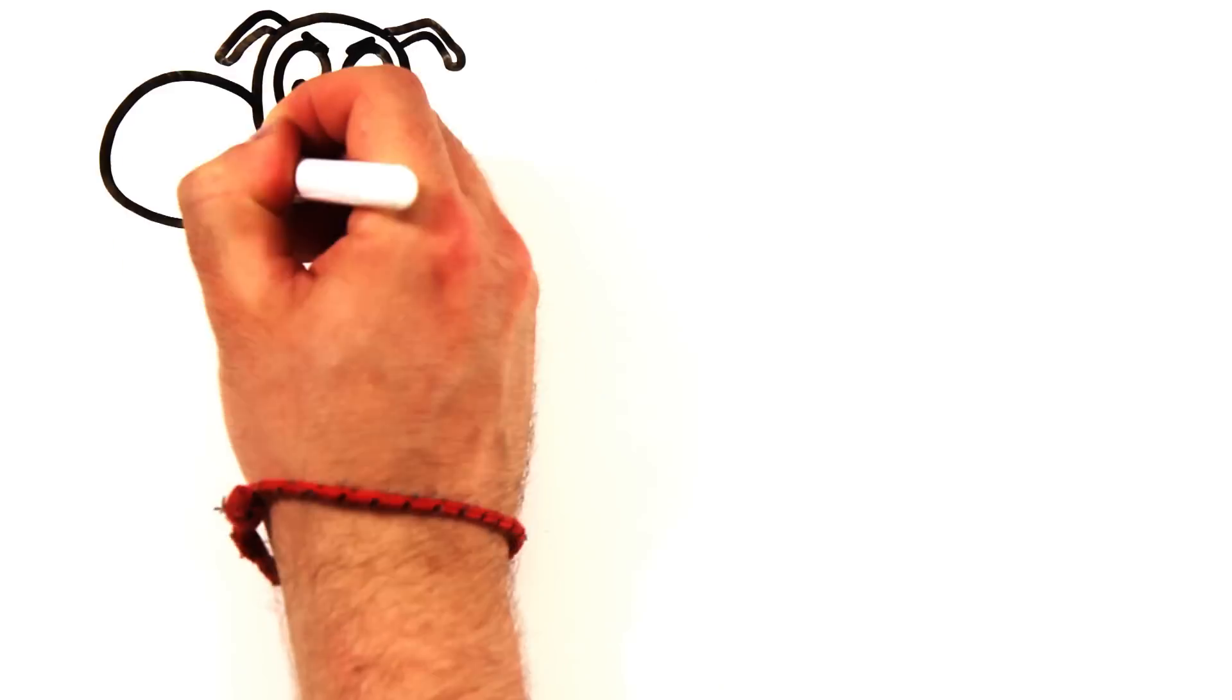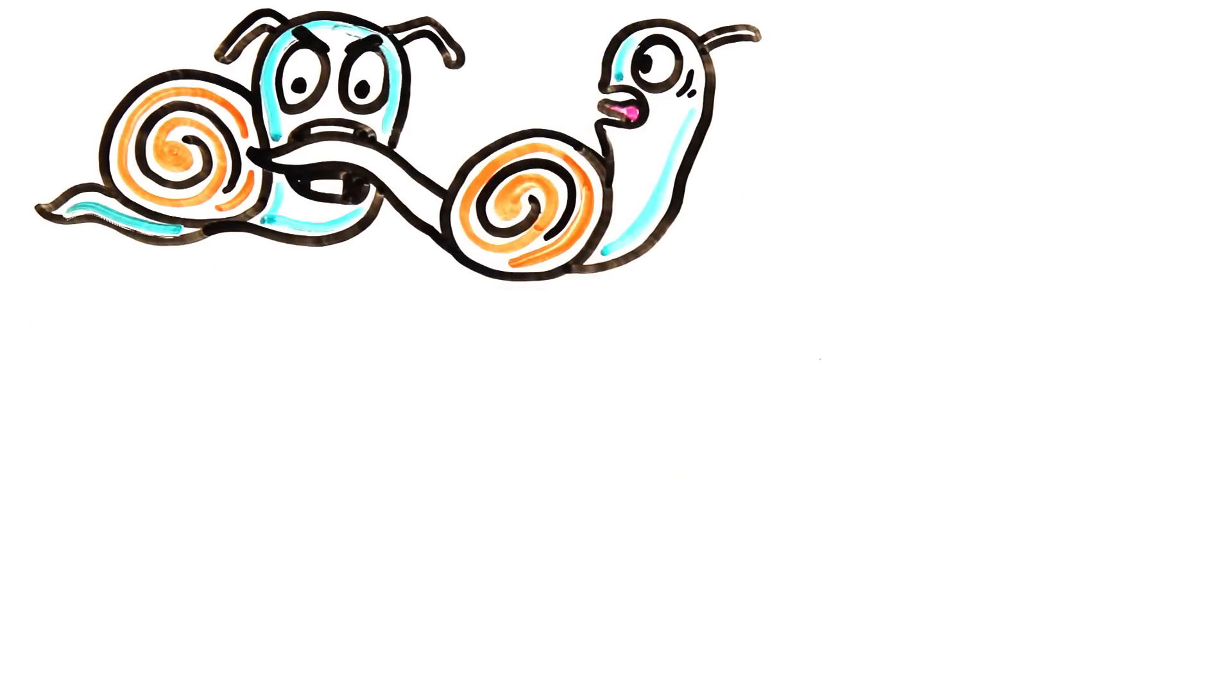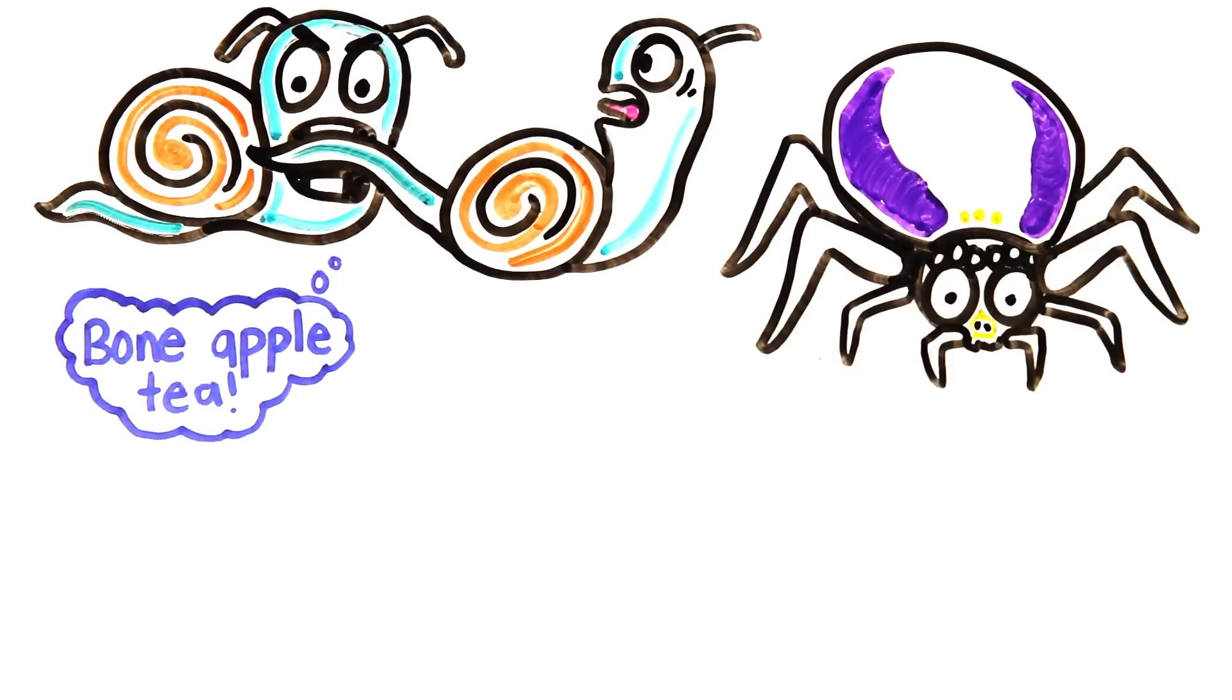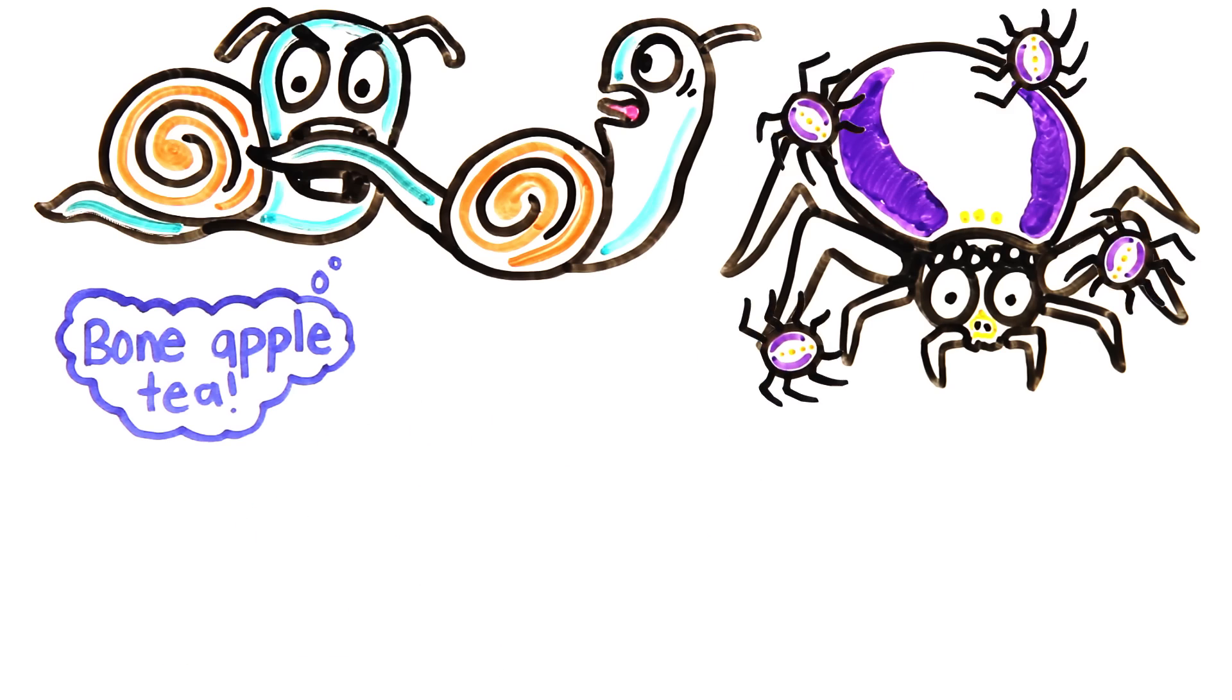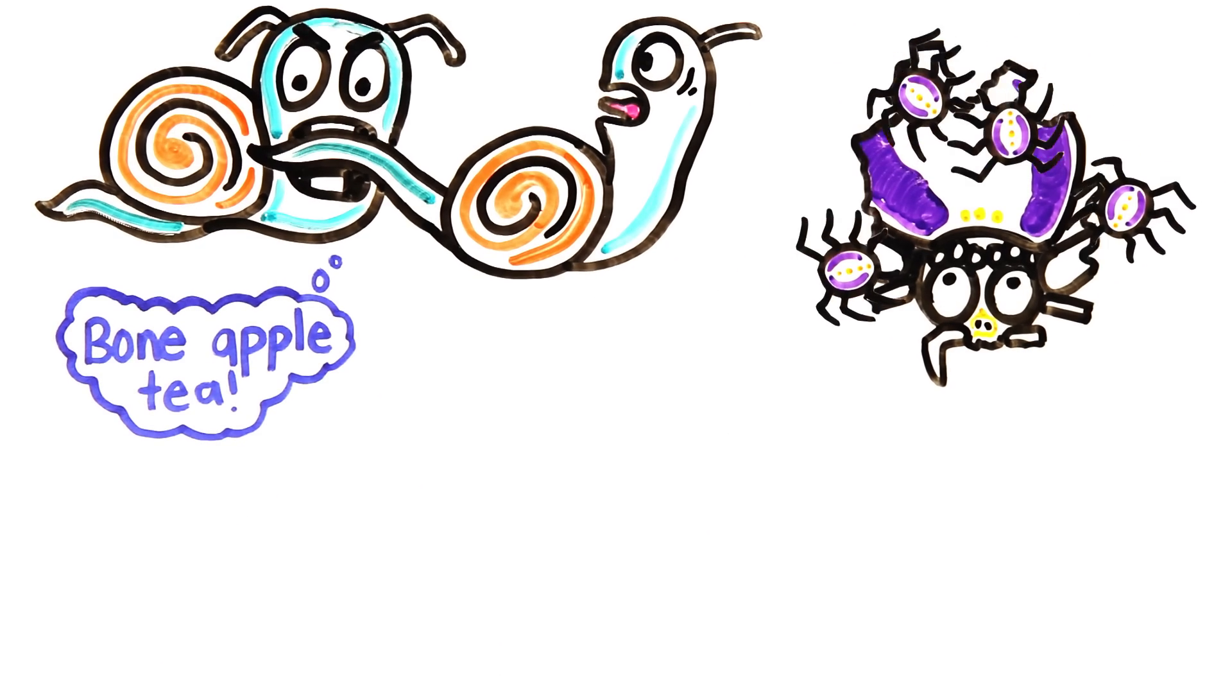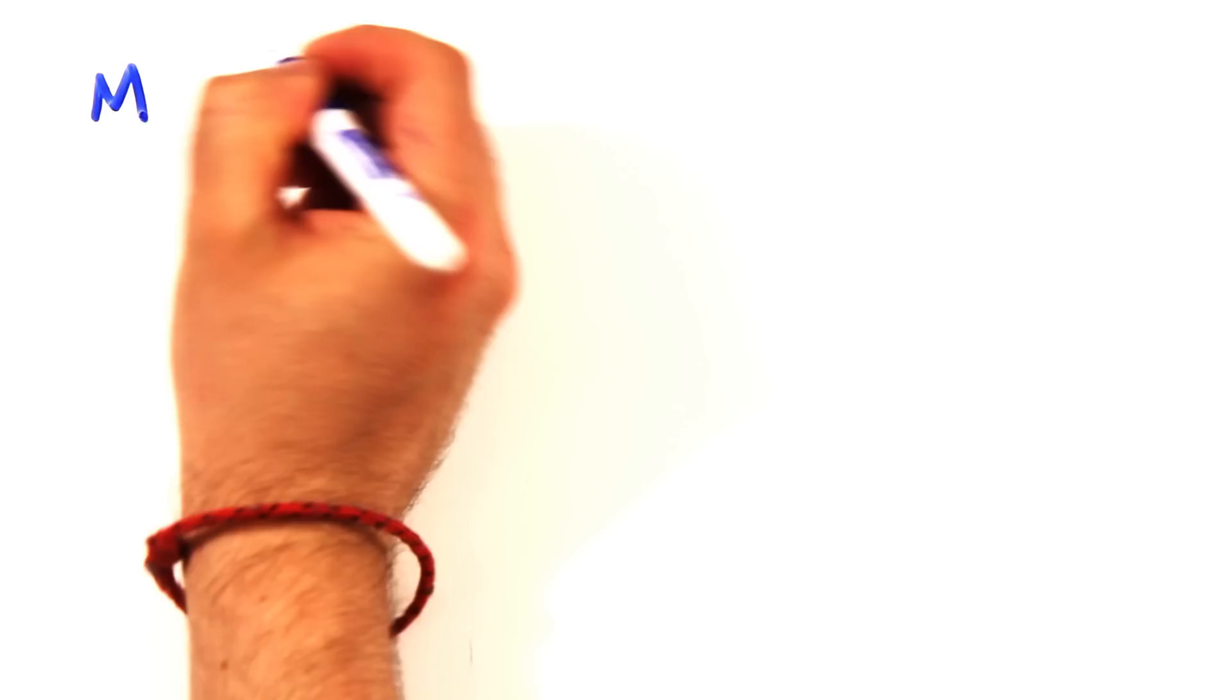If we first look at insects, snails, fish, or amphibians, we can see that cannibalism is abundant. For example, crab spider mothers lay unfertilized nurse eggs for her spiderlings to feast on, and once the eggs are consumed, she offers herself to be eaten entirely in the process called matrophagy.